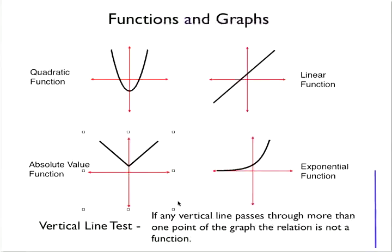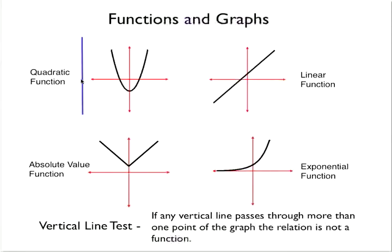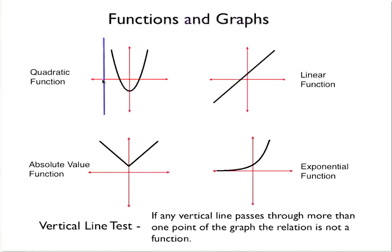When we talk about functions and their graphs, most commonly we talk about the vertical line test in order to test whether or not the graph is indeed a function. What the vertical line test says is: if any vertical line passes through more than one point of the graph, the relation is not a function.